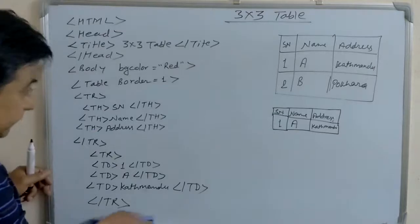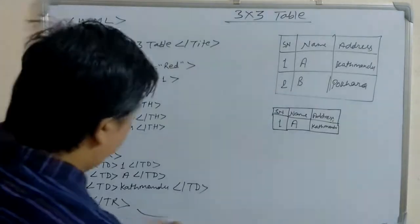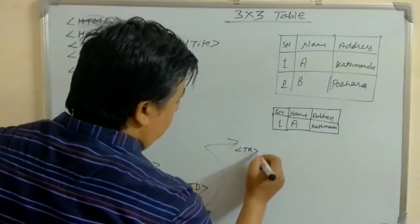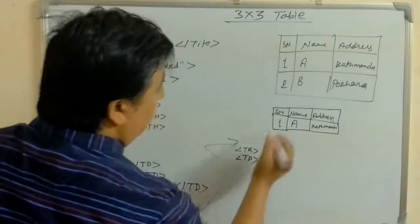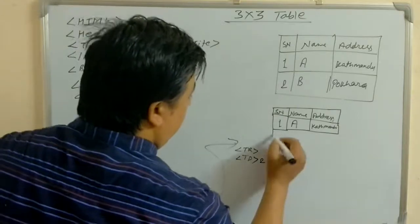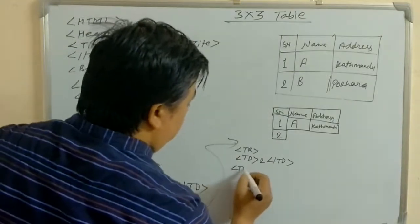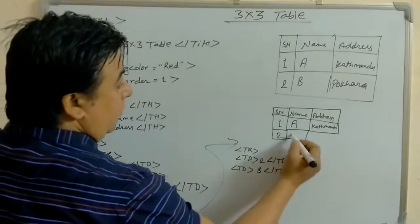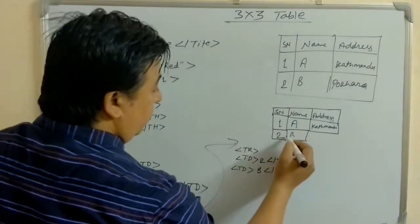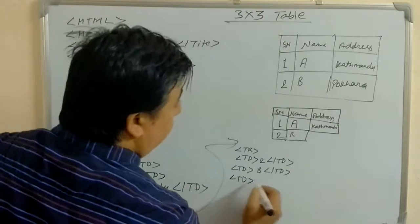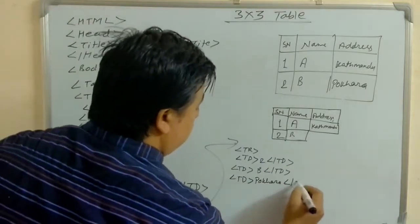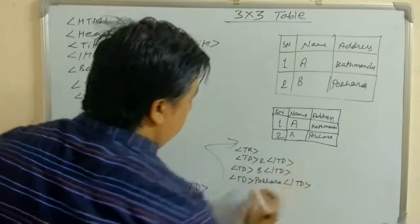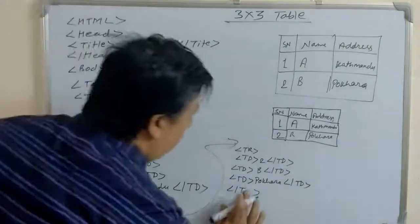Kathmandu. And now this row is also finished. So that, let's close that row. After that, now see here. I'll write here again, start with next row. TR. And inside TD. Inside TD, 2. Close TD. Now here becomes 2. And then after, TD. B. Slash TD. Now here, draw B. Here will be equal. And then after, TD. Pokhara. Slash TD. And Pokhara. This row also finished. End TR table row.